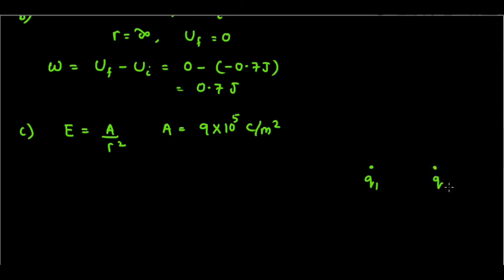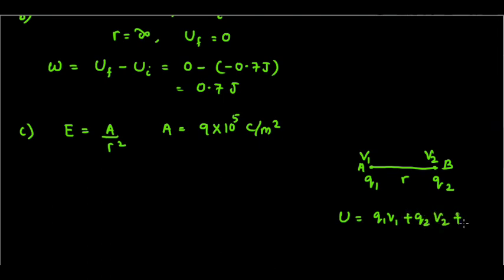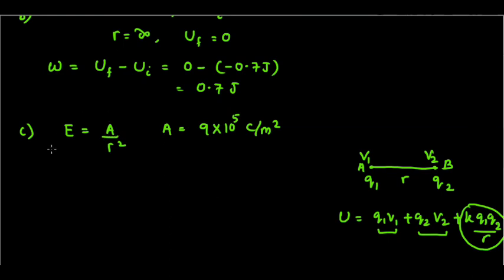If we have two charges q1 and q2 separated by distance r, placed inside an external electric potential where V1 is the potential at point A and V2 is the potential at point B, then the total potential energy is U = q1*V1 + q2*V2 + k*q1*q2 / r. We already calculated the third term k*q1*q2 / r = minus 0.7 joules. We need to find q1*V1 and q2*V2.